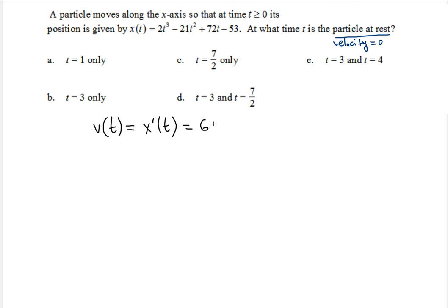3 comes down, multiplies the 2, so we get 6t², and then the power reduces by 1, so it's squared, minus 21 multiplies the 2 that comes down, that gives us 42t. Power reduces by 1, so it's just to the first power. And then plus, t to the 1 comes down, multiplies the 72, unchanged number, t to the 0 becomes a 1, so you don't have to write that down. And of course, the derivative of the constant is 0. So this is the velocity function.